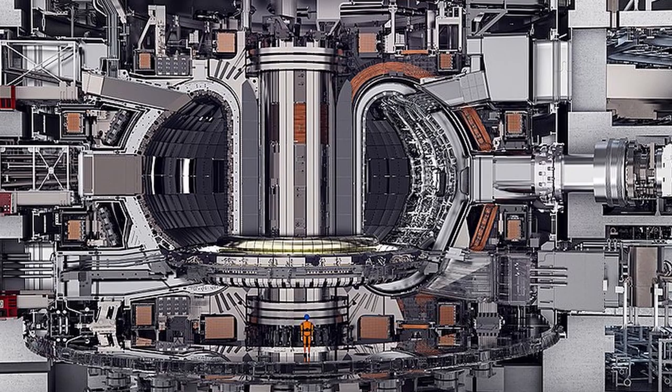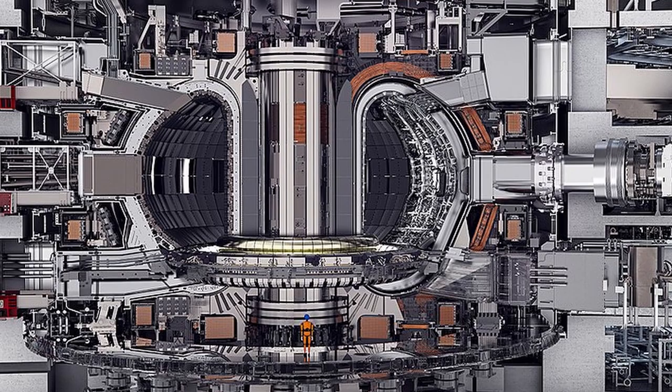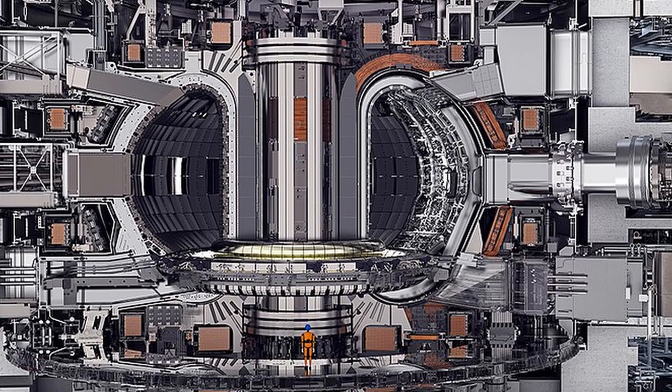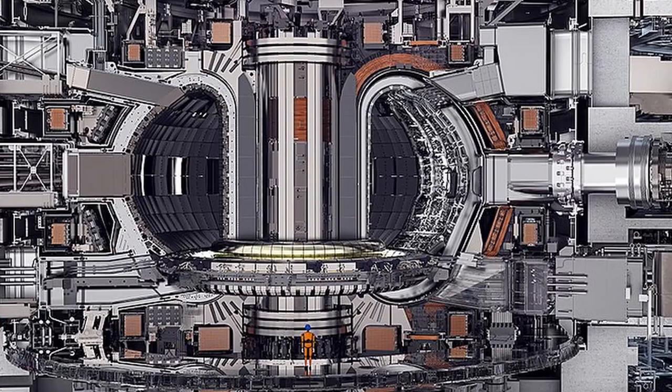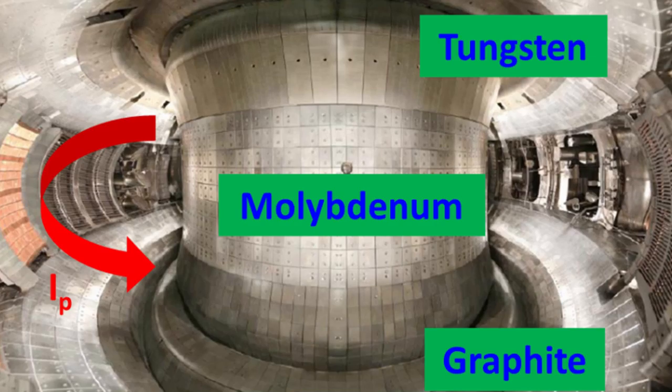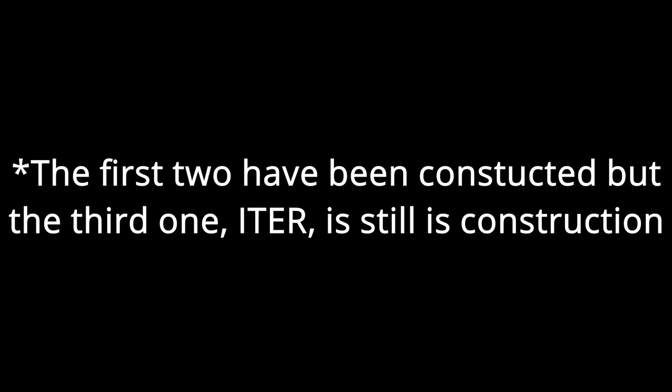Such tremendous heat could not be contained by any human-made material, so in most occasions it is contained by a very strong magnetic field created by superconducting magnets. One popular design for magnetic field containing fusion reactors is a tokamak reactor, which looks like a doughnut. Magnetic field flows through and around the reactor containing the hot plasma. There are many tokamak projects such as the JET, the East Experimental Advanced Superconducting Tokamak, the International Thermonuclear Experimental Reactor — which is the biggest nuclear fusion reactor currently under construction — and many more.